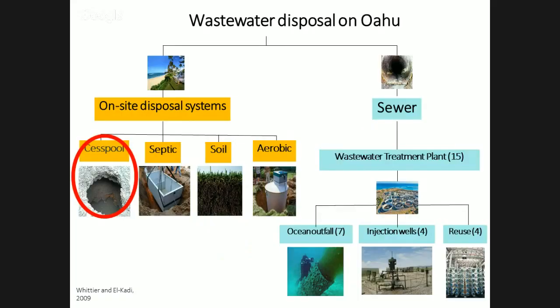Wastewater disposal on Oahu is served by two primary systems. One is the sewer connection, where wastewater goes to a treatment plant. We have 15 major wastewater treatment plants on Oahu: seven dispose of wastewater via ocean outfalls, four re-inject treated wastewater back underground, and four reclaim wastewater, typically for irrigation.